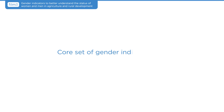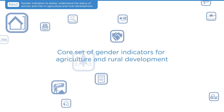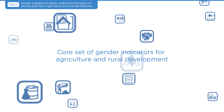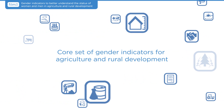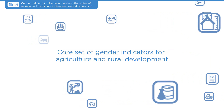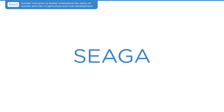When thinking of measuring gender inequalities in agriculture and rural development, a specific set of indicators is needed. This is the reason why the FAO Regional Office for Europe and Central Asia, responding to the data needs identified by member countries, has developed a core set of gender indicators for agriculture and rural development, using SEGA as a framework.